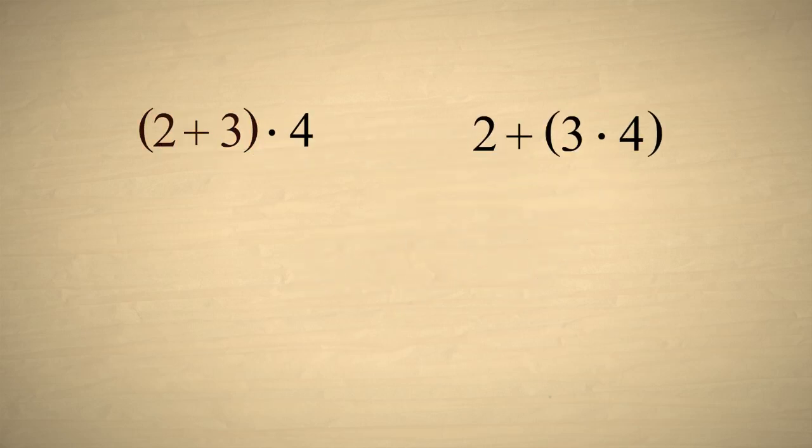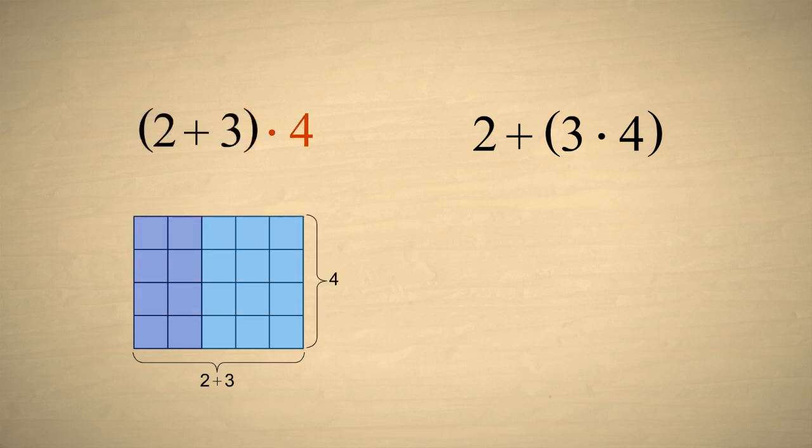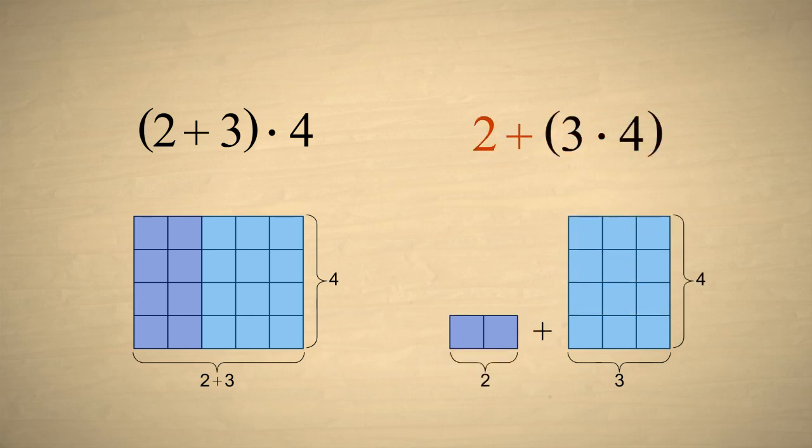So when 2 plus 3 is written in parentheses, we do the addition first. And then we multiply the result times 4. In the second case, the parentheses are around the 3 times 4, so the multiplication is performed first. And then 2 is added to the result.